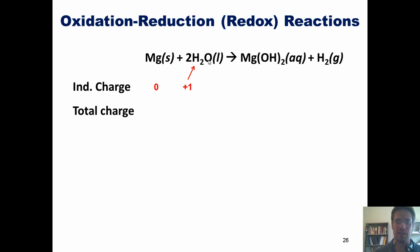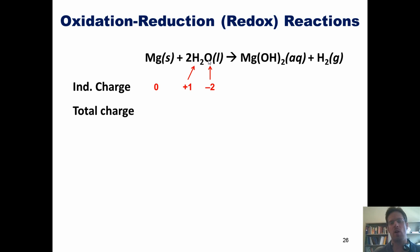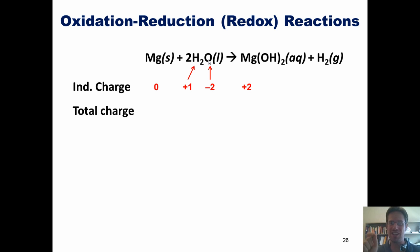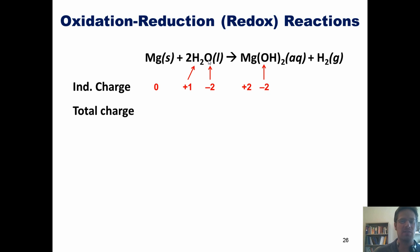Oxygen's oxidation number, according to our earlier convention, is still negative two. Now let's look at the product side. Because magnesium is located in column two of the periodic table, when it becomes an ion it's going to want to have a charge of plus two — that is, it's going to want to lose two electrons to move effectively two columns to the left from where it resides in the periodic table, so that it can feel like its nearest neighboring noble gas. Oxygen's oxidation state remains negative two, and hydrogen's oxidation state remains plus one.